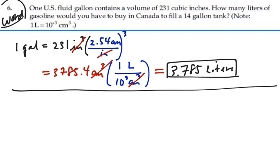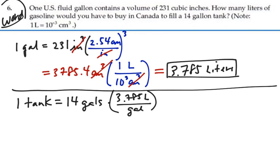Nice to know. But we have a tank full of gas. And one tank is equal to 14 gallons. And we just found out that there is 3.785 liters per gallon. Gallons will cancel out. So 14 times 3.785 is 52.996. So we'll say that's 53.0 liters.